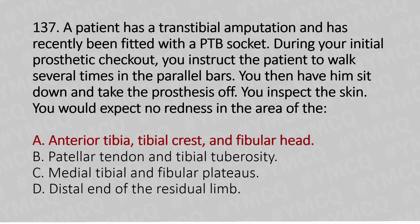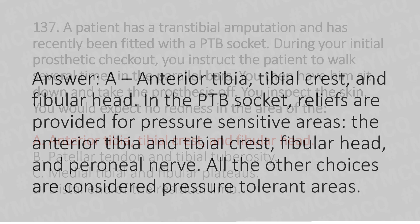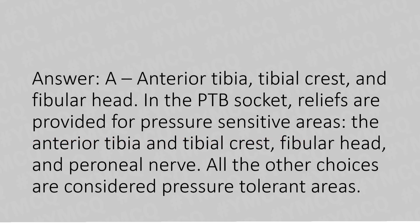The answer is Option A — anterior tibia, tibial crest, and fibular head. In the PTB socket, relief is provided for pressure-sensitive areas: the anterior tibia, the tibial crest, fibular head, and the peroneal nerve. All other choices are considered pressure-tolerant areas.